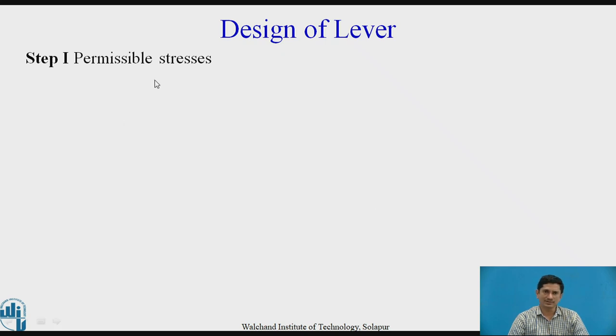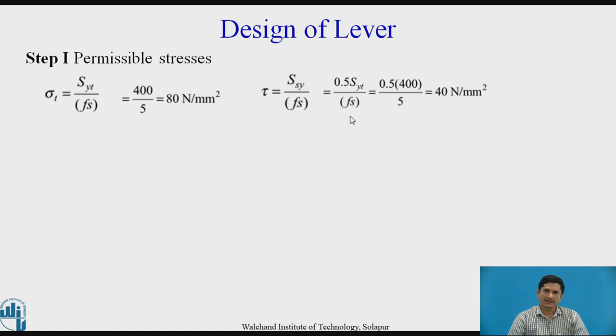The first step is calculation of permissible stresses. Permissible stresses are obtained from the values of the SYT. We know that SYT divided by FS, we can get the working tensile stress. SYT value is 400 and factor of safety is 5. We can calculate sigma T equals 80 N per mm square. This is the permissible value. Similarly, applying the maximum shear stress theory, we know that SSY upon FS will give us the tau. But how to get SSY? SSY equals 0.5 SYT by maximum shear stress theory. Divided by the factor of safety, we can get 0.5 into 400 divided by 5, that will give us the working shear stress value of 40 N per mm square. These two values are taken as the permissible stresses for the design of the lever.